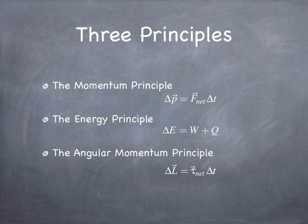This course is based on three fundamental principles. The first is the momentum principle, which we're going to begin in earnest in chapter two. It says that the change in the momentum of a particle over a period of time is equal to the net force acting on the particle — the degree to which the surroundings exert a net force on the particle or system — times the time over which that net force acts. This principle is most accurate if the time interval is very small compared to the time over which the net force can change.